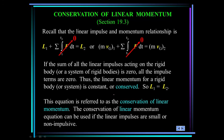Moving into section 19.3 — conservation of linear momentum. If there are no external forces acting on the body, the impulse term goes away, and you're left with linear momentum at state one equal to linear momentum at state two. The linear momentum is the mass times the velocity of the mass center.